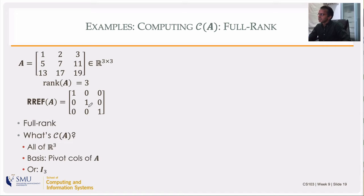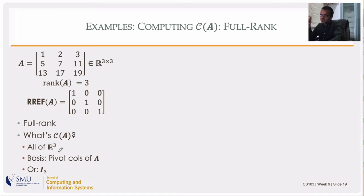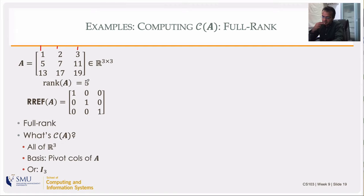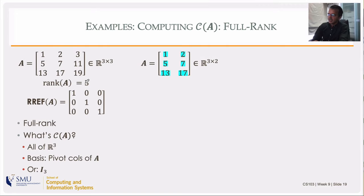For this full-rank 3×3 matrix, the column space is all of ℝ³ — not just a subspace, but the entire space. My recipe says to take the pivot columns of A as a basis for the column space, but since it's all of ℝ³, the identity matrix is a better basis. The basis for this full-rank matrix's column space is the identity matrix.